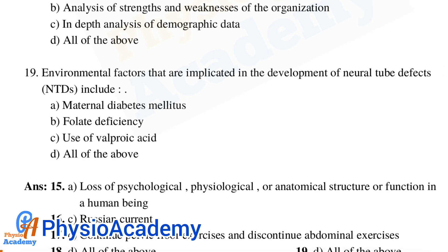Question number 19: Environmental factors that are implicated in the development of neural tube defects include — Option A: maternal diabetes mellitus. Option B: folate deficiency. Option C: use of valproic acid. Option D: all of the above. The correct answer is option D, all of the above.